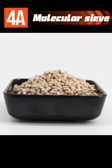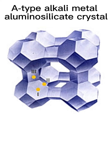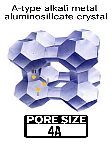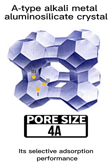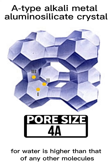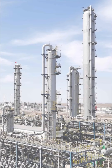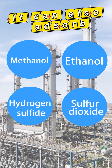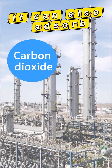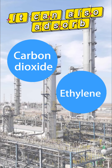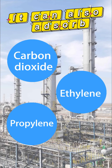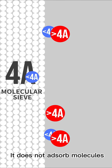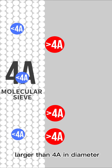4A molecular sieve is an A-type alkali metal aluminosilicate crystal with a pore size of 4Å. Its selective adsorption performance for water is higher than that of any other molecules, and it can absorb methanol, ethanol, hydrogen sulfide, sulfur dioxide, carbon dioxide, ethylene, propylene, etc. It does not absorb molecules larger than 4Å in diameter.